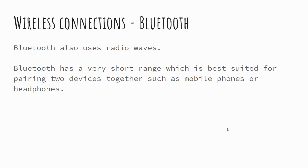Bluetooth is another wireless alternative, most commonly used for headphones, Bluetooth mice, or transferring data between two phones. It's not the quickest and has a very short range, but it's appropriate as a wireless connection for connecting devices together in a network.